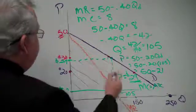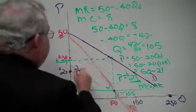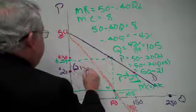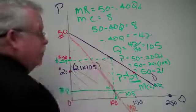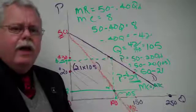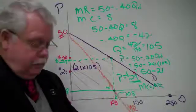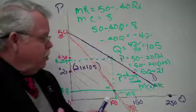What would that be? That would be $29 minus 8 is $21 times 105 units. So whatever that is, that is their profit. Okay? That's where we're going with this.